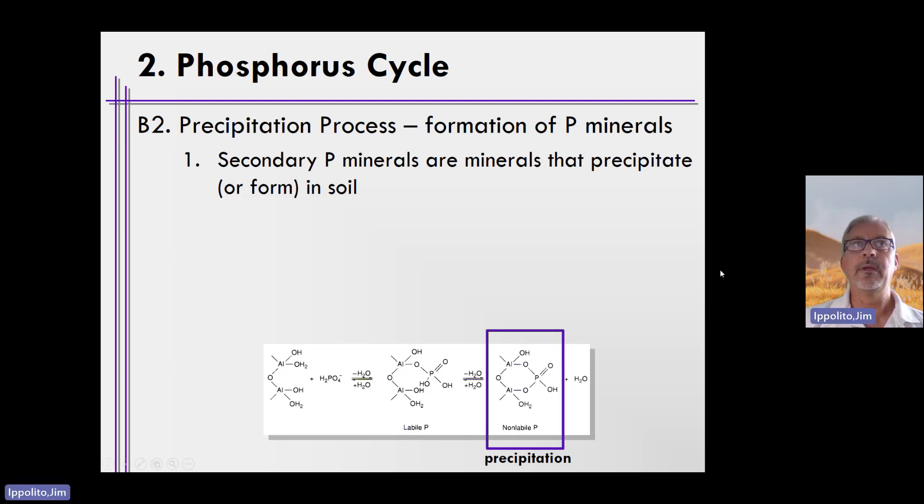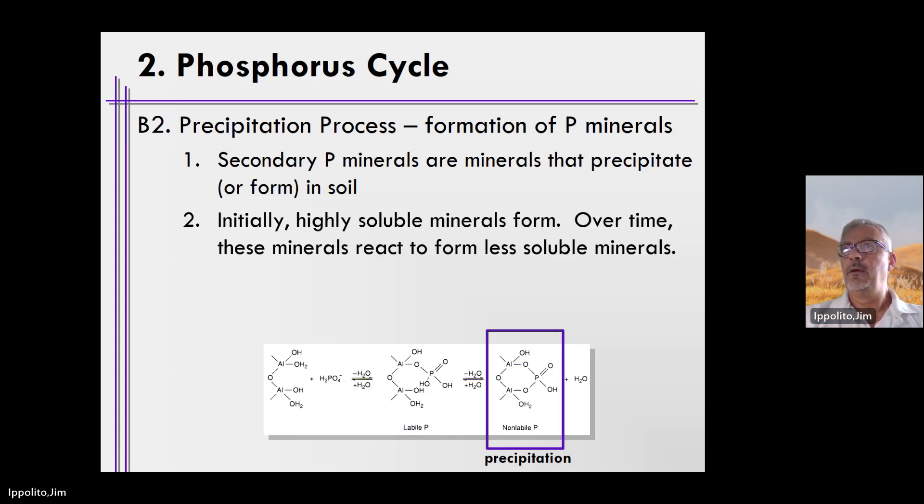When precipitation initially occurs, the mineral that is formed is relatively highly soluble. It may be available to plants, maybe, but it's highly soluble regardless. Over time, these minerals become, via reactions, less and less soluble. So the mineral structure may look the same, but when these minerals first precipitate, they're amorphous in nature. They're like a blob.